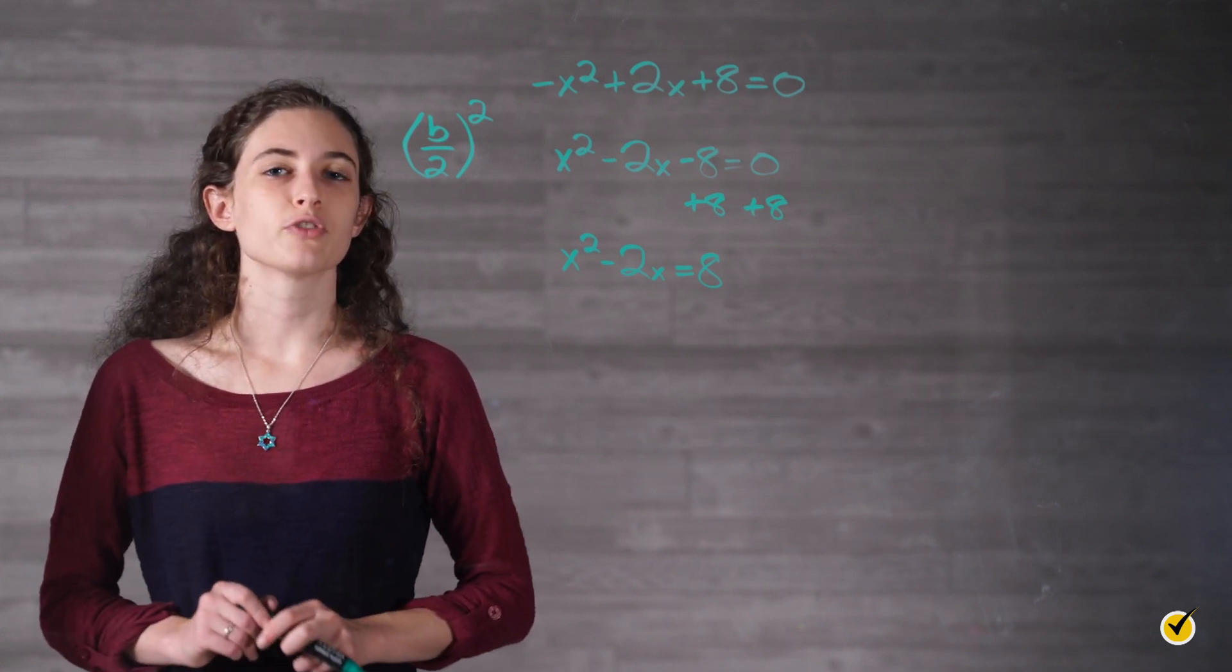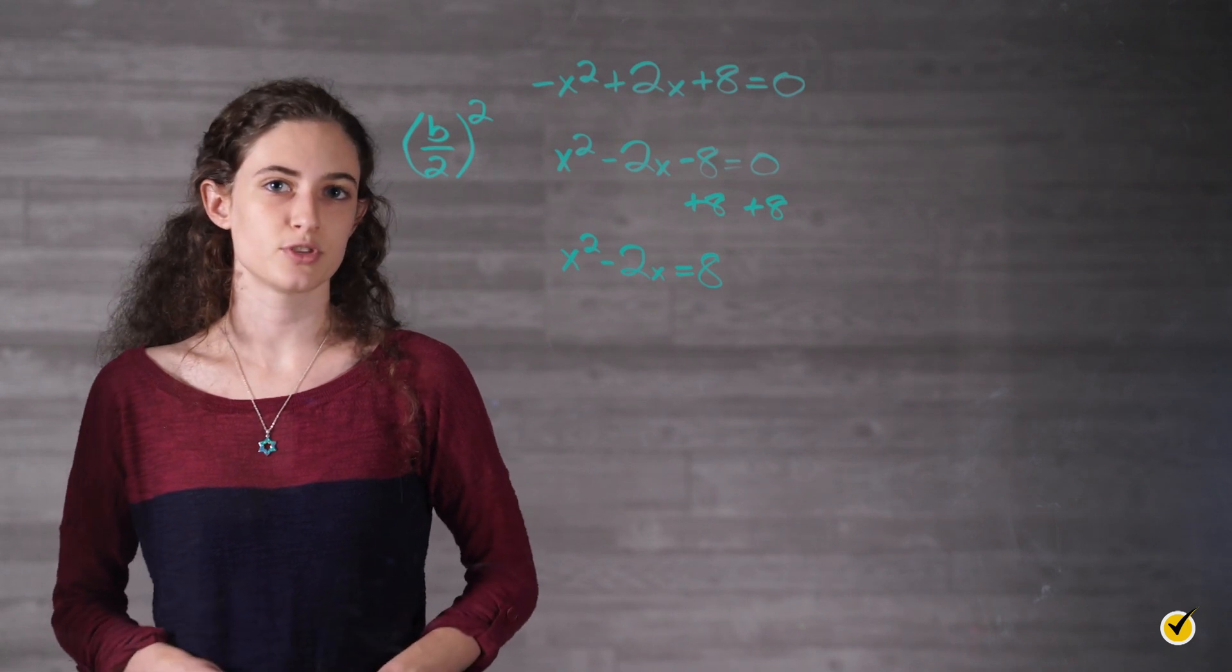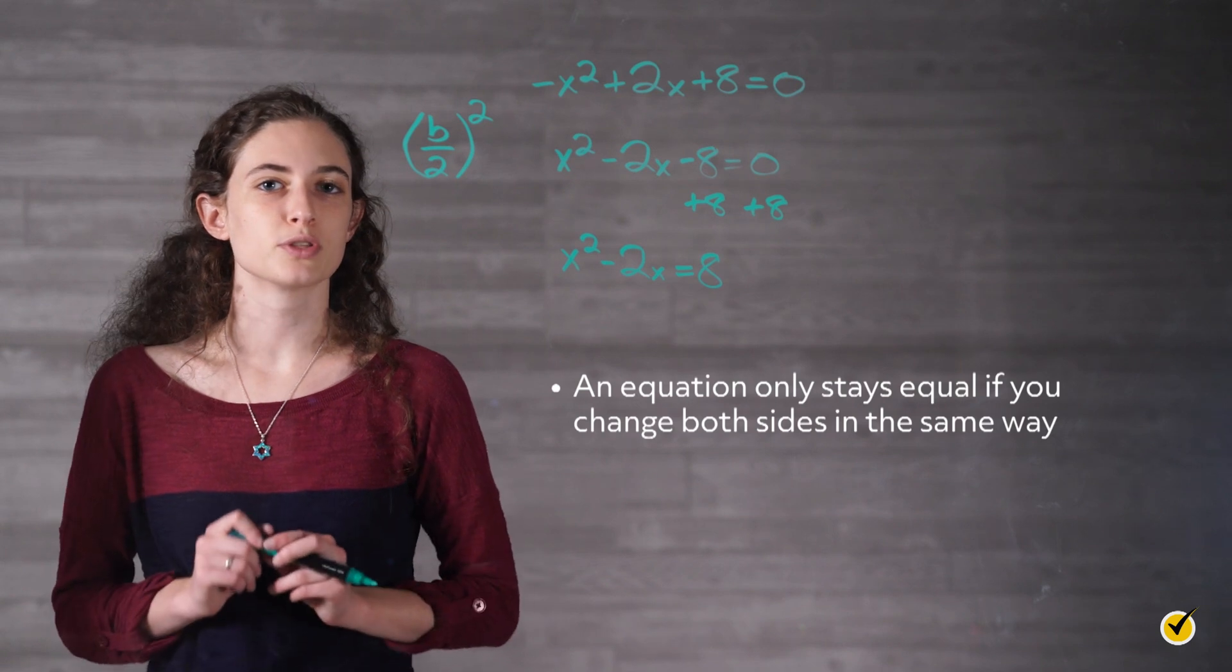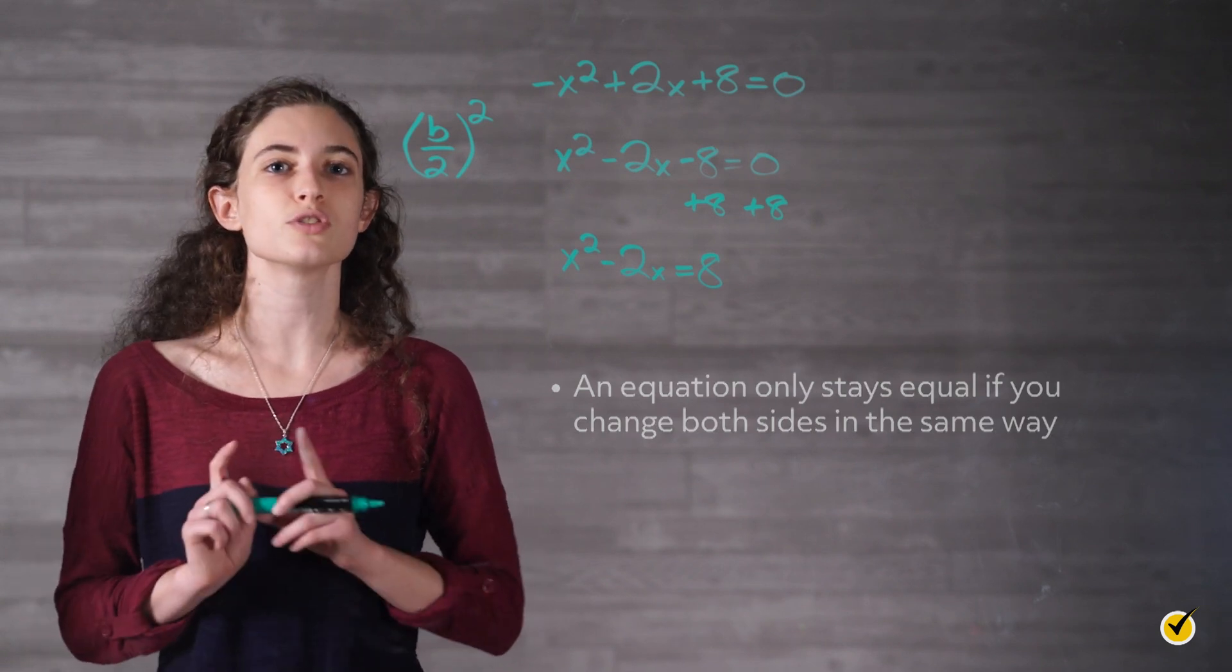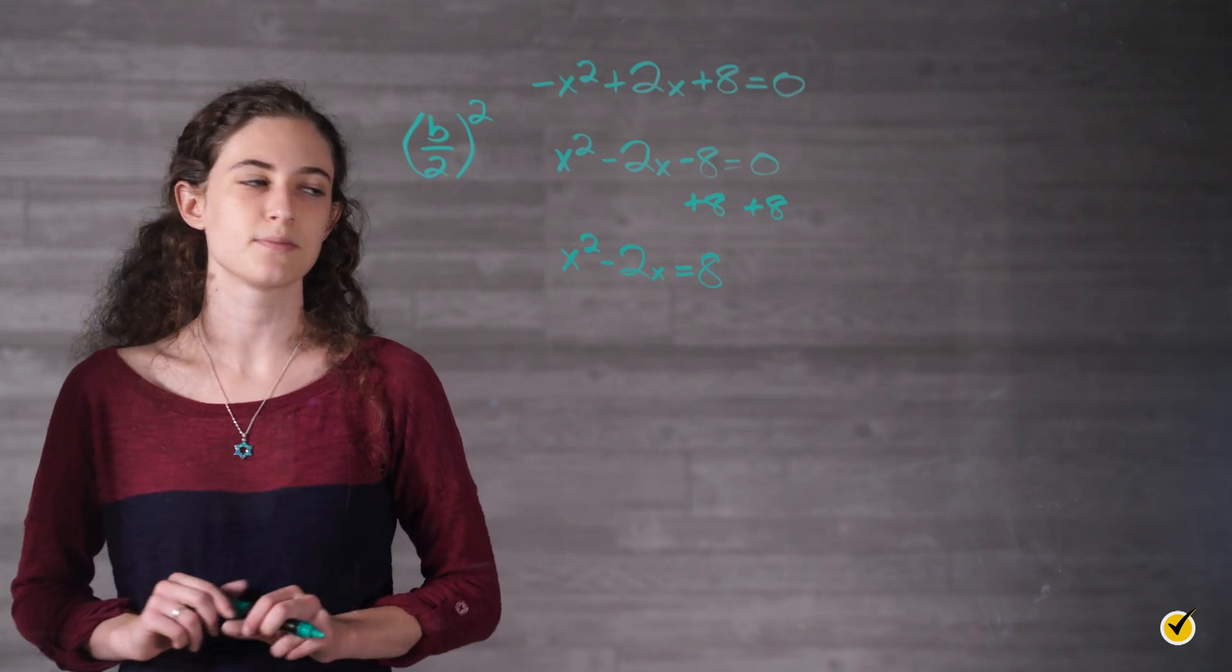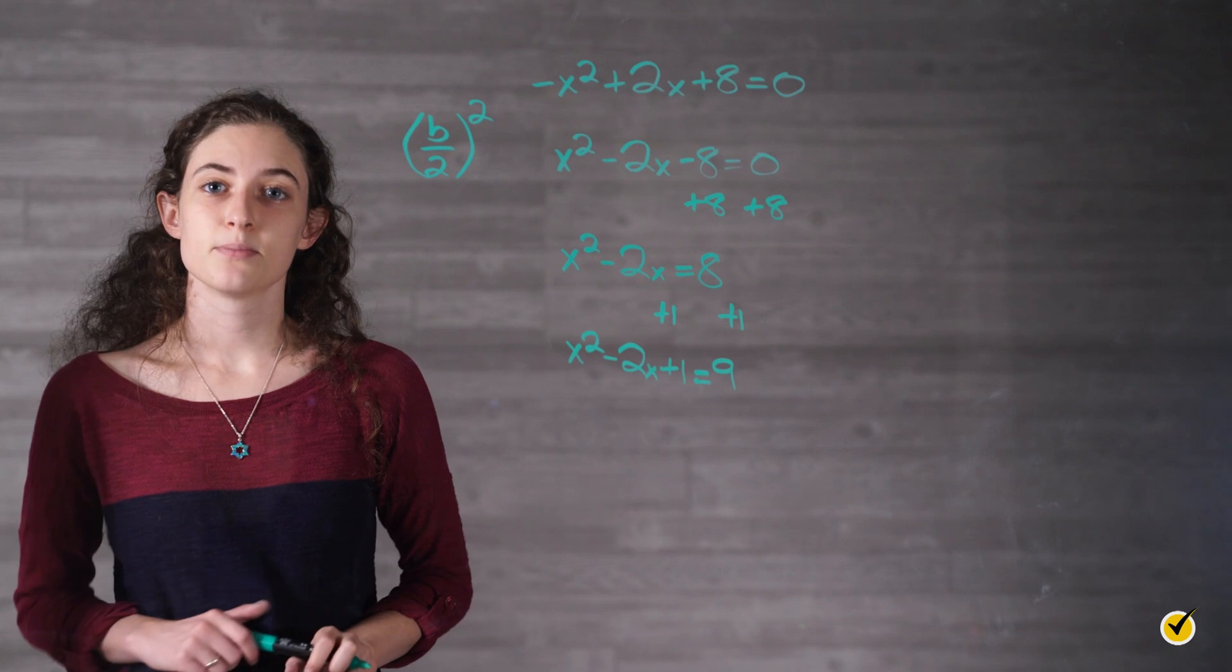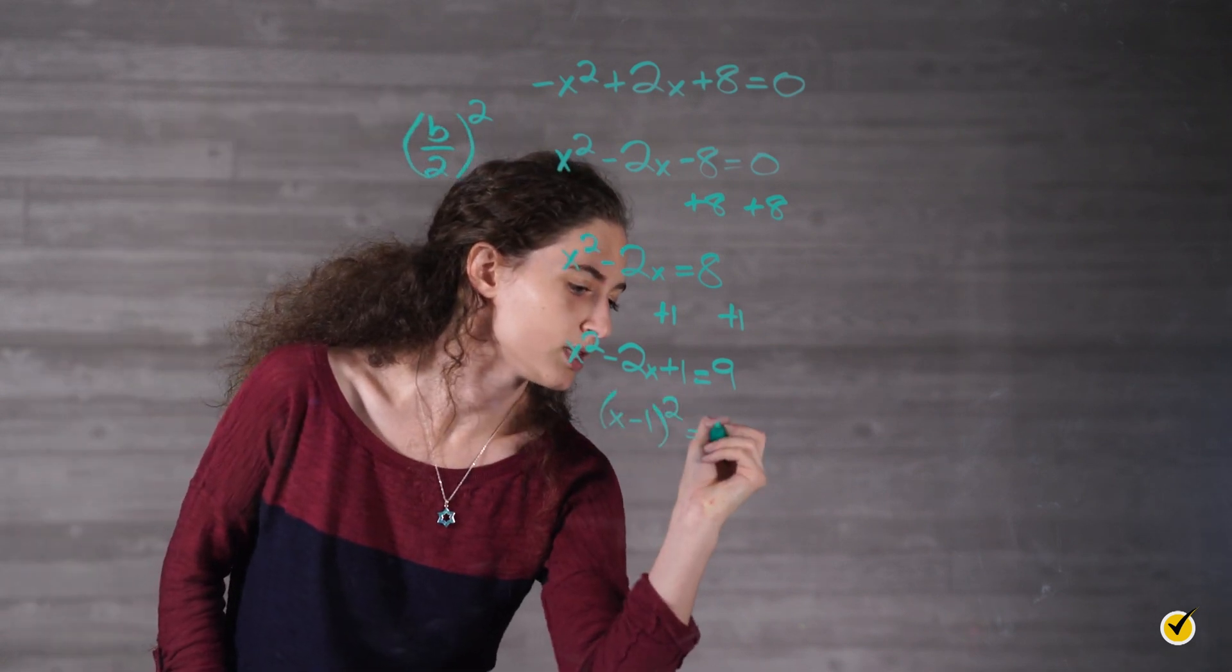In our equation, we'll add (negative 2 over 2) squared, which equals 1, since our b is equal to negative 2. Remember, an equation only stays equal if you change both sides in the same way. So since we're going to add 1 to our left side, we also need to be sure to add 1 to the right side. Now the left side can be factored. (x minus 1) squared is equal to 9.